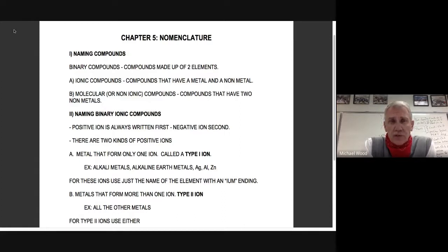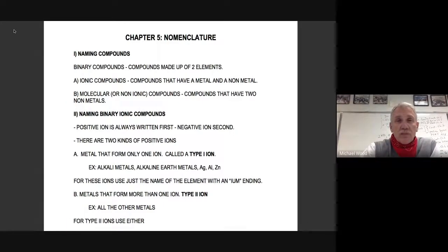Binary compounds are compounds made up of two elements. Water is a binary compound because it's got two elements in it, hydrogen and oxygen. What we worked on first are binary ionic compounds. Ionic compounds have a metal and a nonmetal. What we're going to learn about today are naming binary molecular non-ionic compounds when we have two nonmetals. That's what we're going to get into today.